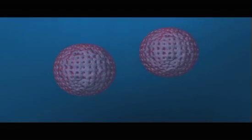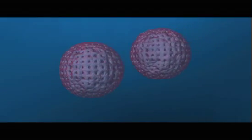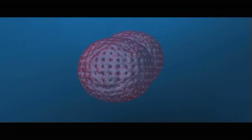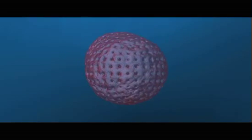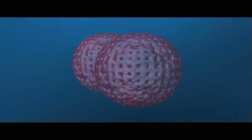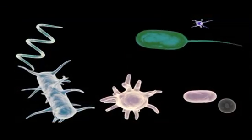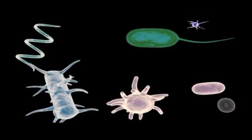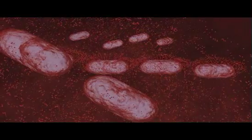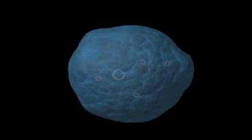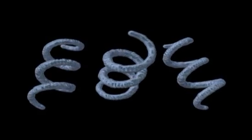Most prokaryotes are encased in rigid but porous cell walls that protect them from rupturing due to osmotic pressure in watery environments and give different types of bacteria their characteristic shapes. The most common shapes include rod-like bacilli, spherical cocci, and corkscrew shaped spirilla.